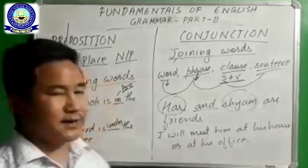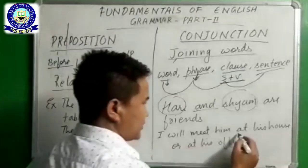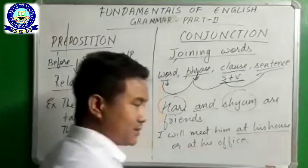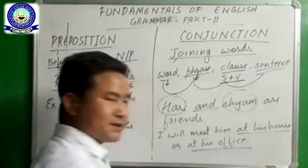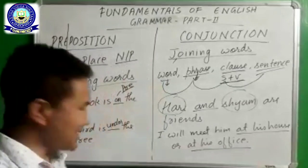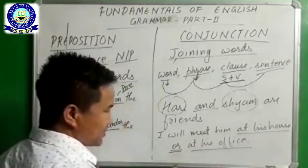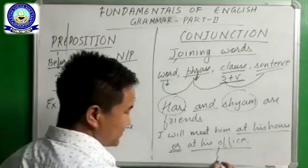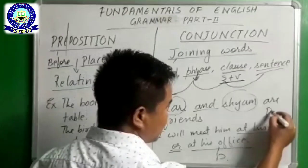Similarly for phrase: 'I will meet him at his house or at his office.' Here we have got our conjunction word 'or' — this is a phrase and this is also a phrase, so it joins phrase to phrase.